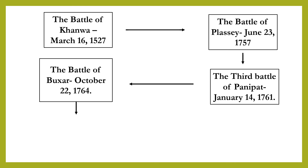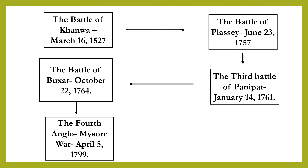Put the arrow and finally write the last point: the fourth Anglo-Mysore War, April 5, 1799. At this stage, we do not put any further arrows or boxes because we do not have more points. So in this way, we have prepared our flow chart.